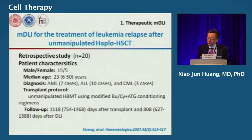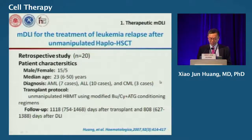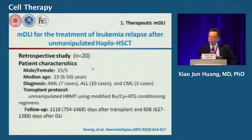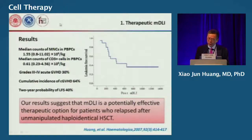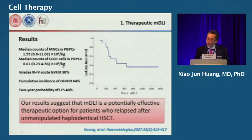With this modified donor lymphocyte infusion, we were the first to use it to treat relapse after haploidentical transplantation. In 20 cases of patients with malignant disease relapsed after haploidentical transplantation, using modified donor lymphocyte infusion for treatment of relapse, we achieved nearly 20% of patients achieving two-year disease-free survival.